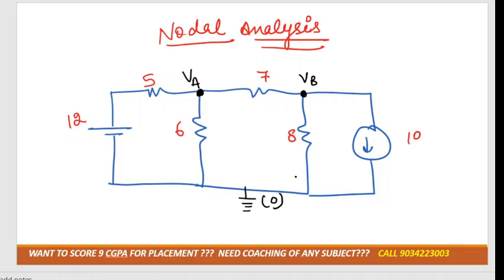Here the potential is always zero. Next step is to mark the current direction in all the different branches. We can mark it according to our convenience. It's not fixed that the way I marked, you should also mark the same thing. So it can be I1, I2, I3, I4, and I5.